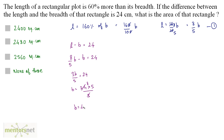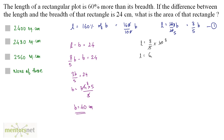So B is equal to 24 times 5 by 3 — 3 eights are 24, and 8 fives are 40 — so B is equal to 40 cm. Now we want the length. Length equals 8 by 5 times B, so L equals 8 by 5 times 40 — 5 eights are 40 — and therefore length is equal to 64 cm.